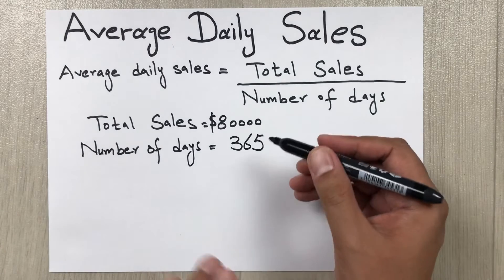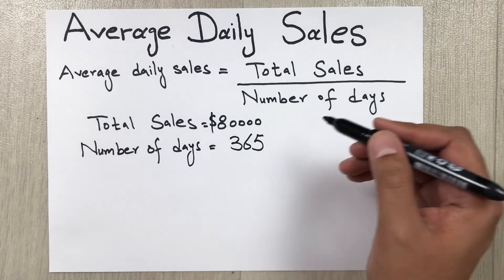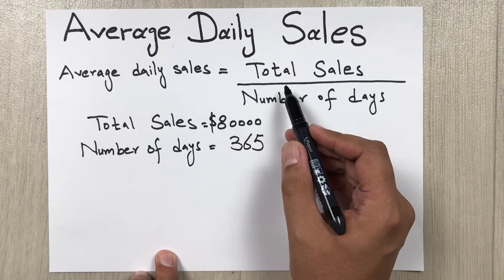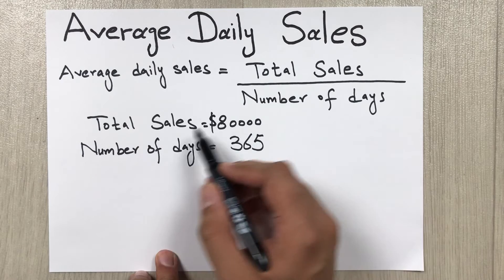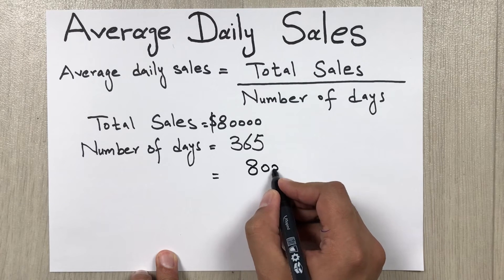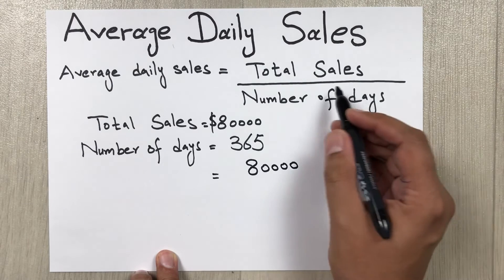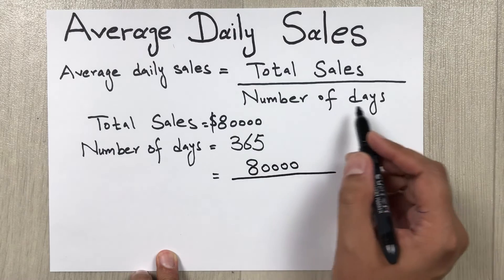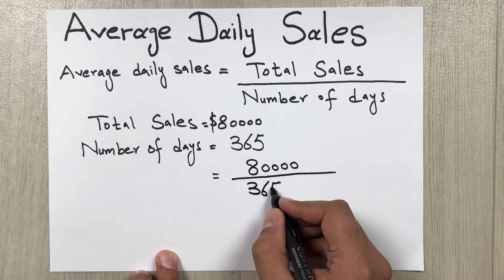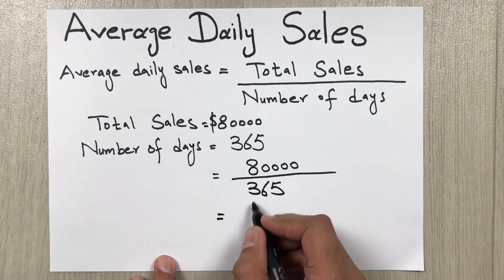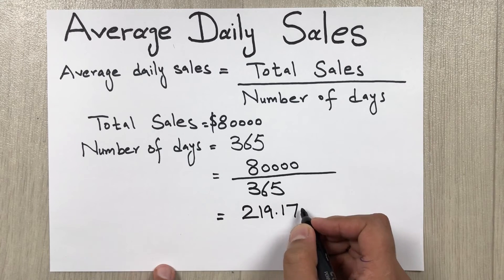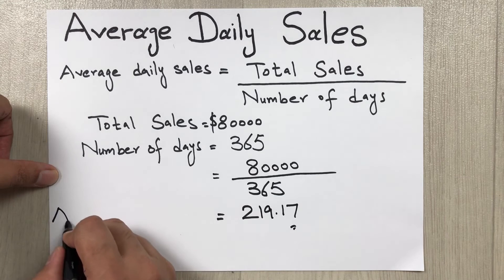Now we have the values, so we'll put them into the formula. The formula is total sales divided by number of days: 80,000 divided by 365. When we do this calculation, our answer will be 219.17. So this is our average daily sales.